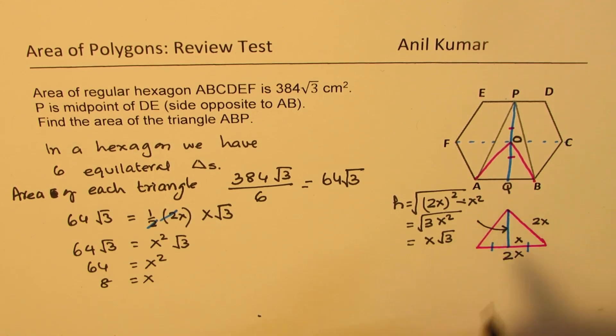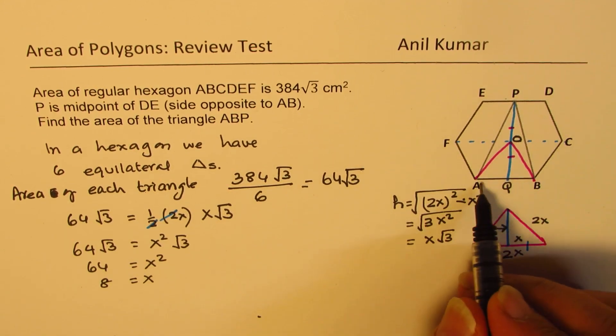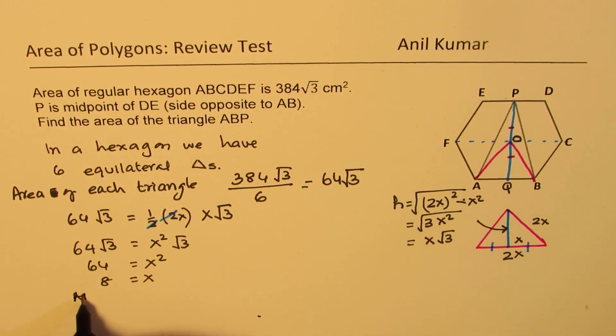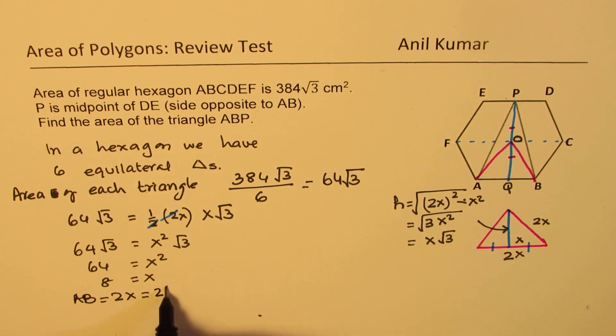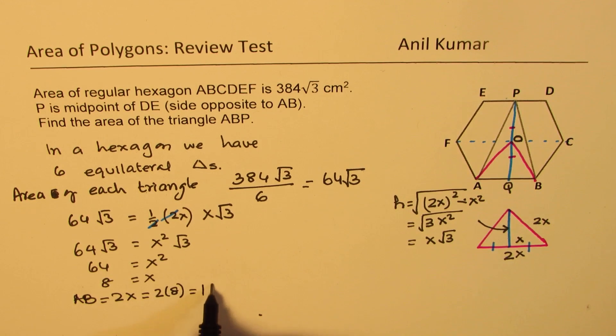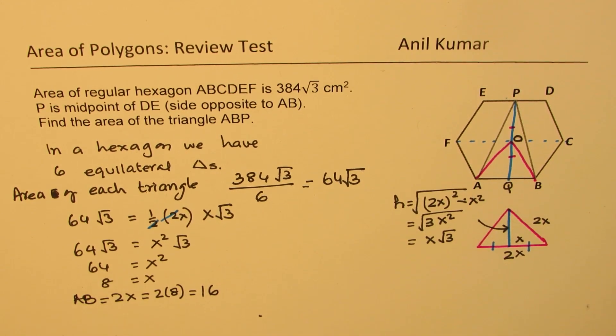What we get here is that the base AB, which is 2x, will be equal to 2 times 8, which is 16. So A to B, that is 16 for us.